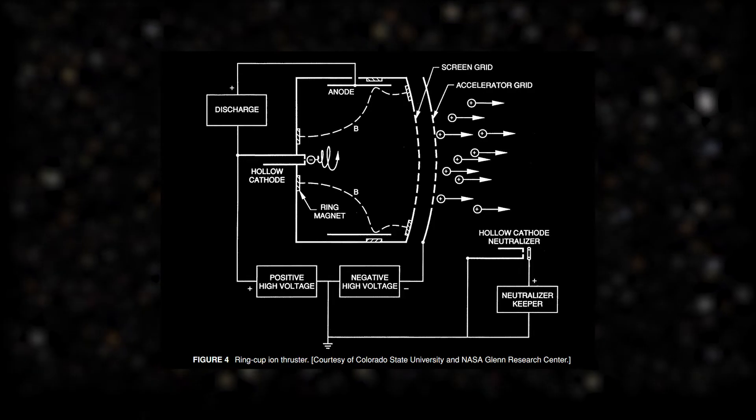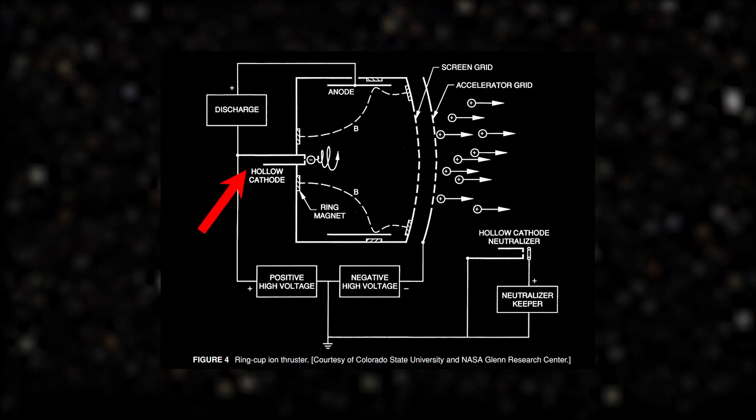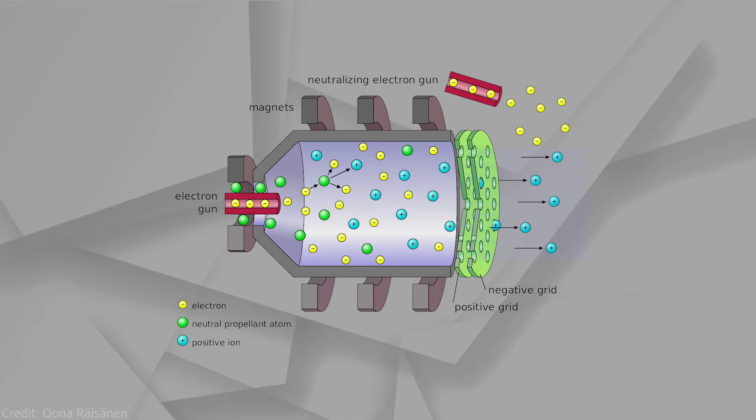Xenon goes into a chamber with a hollow cathode, which is a source of electrons. It works kinda like this. Xenon is supplied into a chamber, green spheres are its neutral atoms.